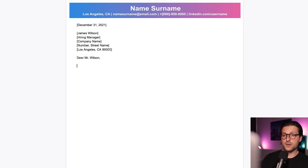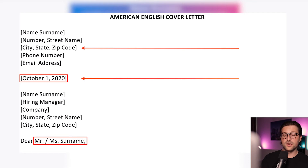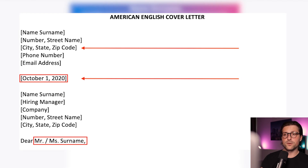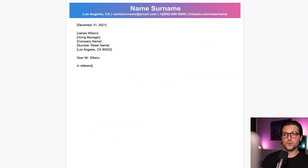If you need to write a cover letter for a school assignment, you might need to list the contact information section the traditional way. The official format for an American English cover letter looks like this. For British English, you need to put the contact information and date on the right side, then put the date first, then the month, and exclude the comma. The subject is included in the British English letter — commonly used in the UK but usually left out in the US. For American usage, the month is placed first, followed by the date, and you need to insert a comma between the day and year. We also need to include a dot after the abbreviation MR or MS. For British English, you can leave it out.